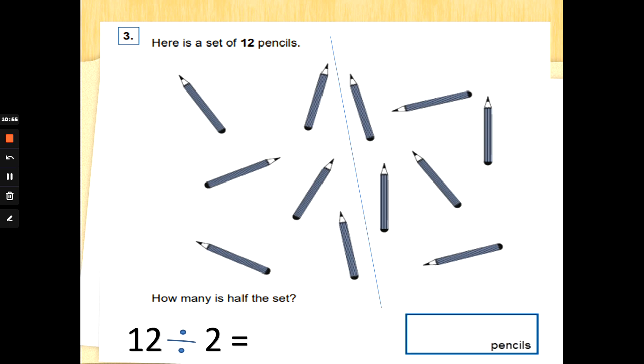Here is a set of twelve pencils. How many is half the set? We've learned in arithmetic that twelve divided by two is the same as half. If you know what half of twelve is, you will know the answer without having to draw anything. How do we do twelve divided by two? Let's start with no fingers up and counting twos. Two, four, six, eight, ten, twelve. Half of twelve is six. For me, knowing half of twelve, knowing I can divide by two is easier than trying to find a line and draw a line to make equal sets. So half of twelve is six.